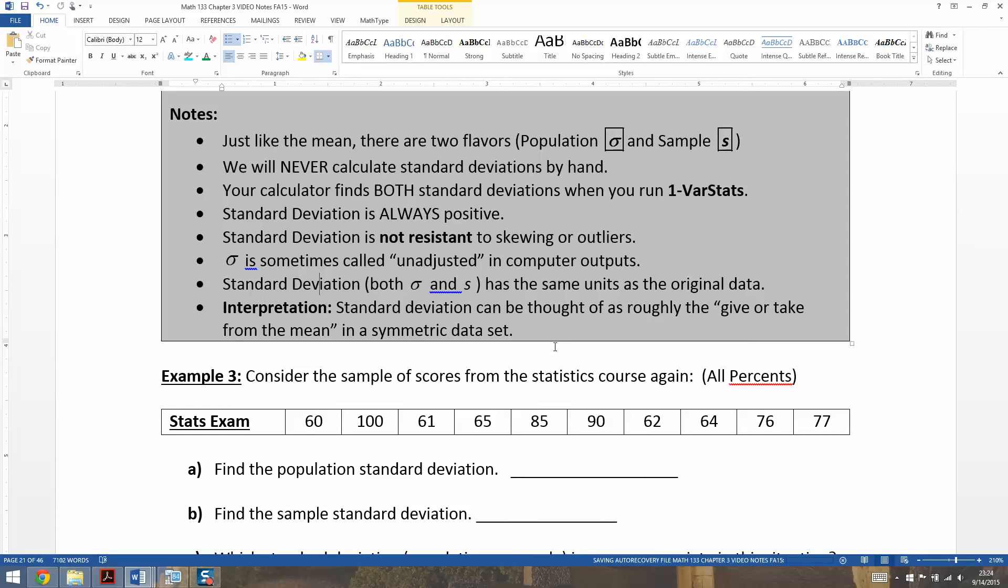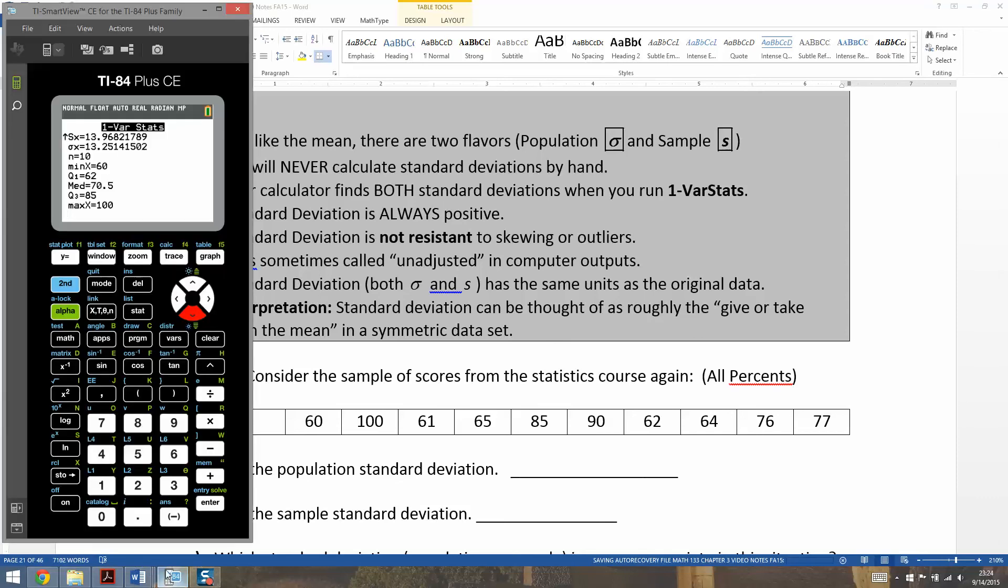All right. So how do we calculate it? Well, it's the same thing that you do when you want to calculate the mean or the median. So you go to stat, you go to edit, you enter your data right here, which we have. Then you go to stat, calculate, number one, one variable stat. L1 is your list. So go down to calculate and press enter.